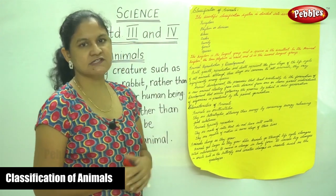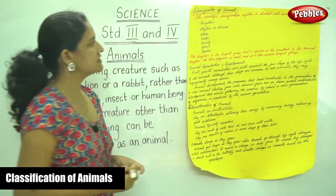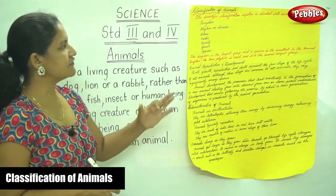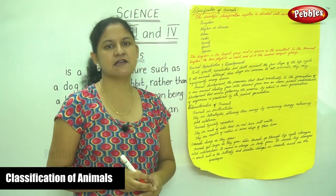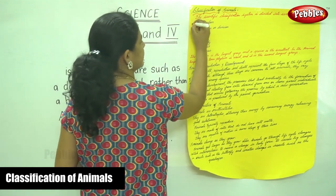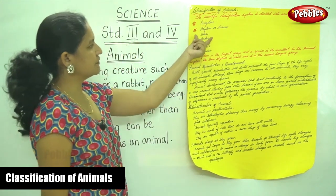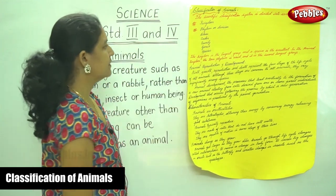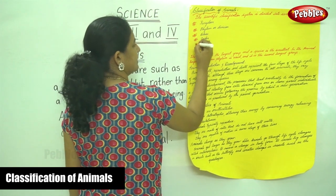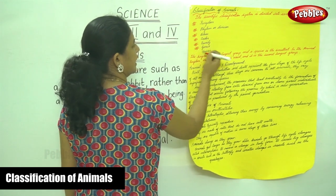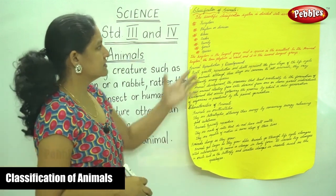Now we are going to see the classification of animals. The scientific classification system is divided into seven major groups: first is the kingdom, next is the phylum or division, then the class, the order, the family, the genus, and finally the species.